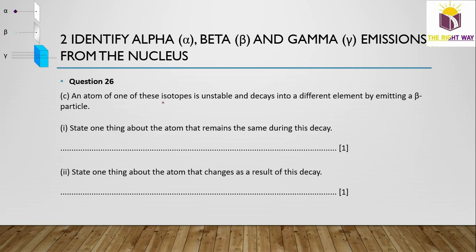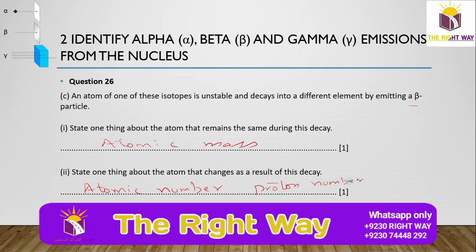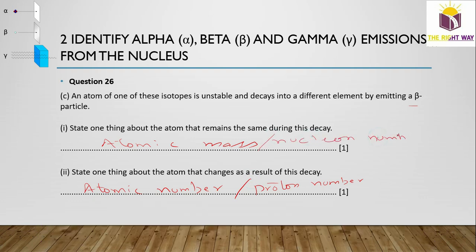An atom of an unstable isotope decays into a different element by emitting a beta particle. One thing that remains the same during this decay is the mass number (atomic mass). One thing that changes is the atomic number, also called the proton number. Both 'nucleon number remains same' and 'atomic number changes' are valid answers.